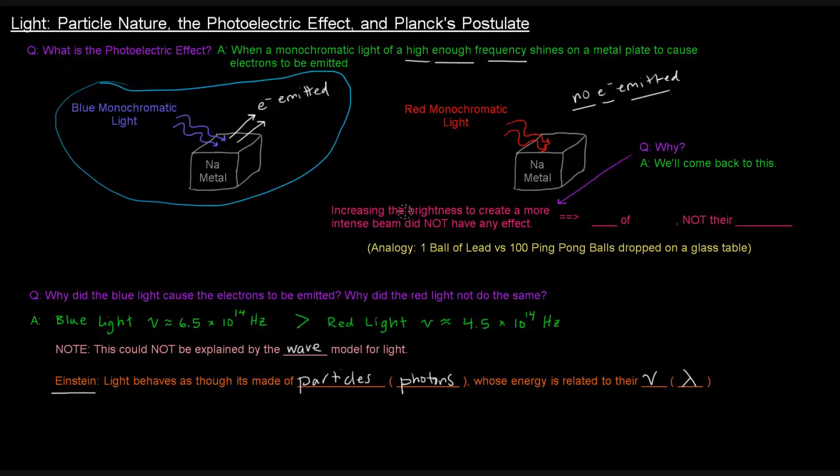Well, that's because when you increase the brightness or the intensity of a light's beam, what you're doing is you're increasing the number of photons. You're not increasing their energy. So it doesn't matter how many of these red photons you shine at this sodium metal, their energy, the energy of each one is not high enough to knock electrons loose. Whereas the blue monochromatic light's photons were higher in energy, and they were capable of causing the electrons to be emitted.